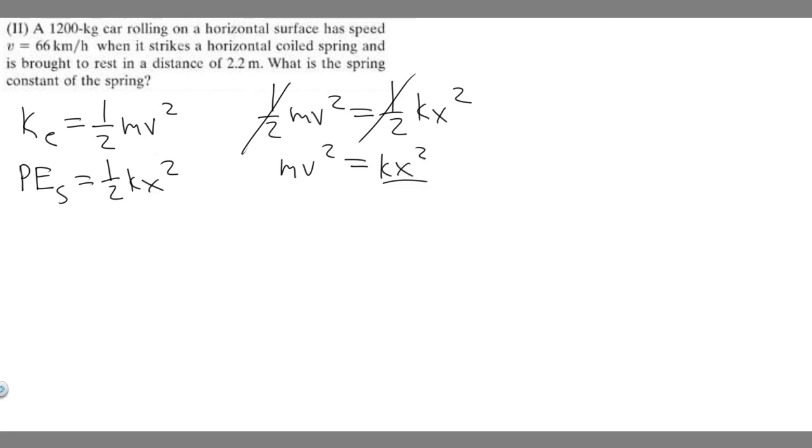We're solving for k. Divide both sides by x squared, and you get that k equals mv squared over x squared.